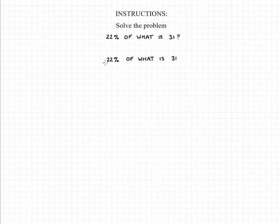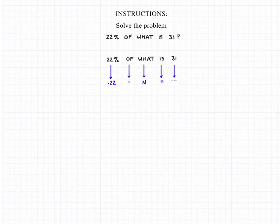To solve this problem we need to translate it: 22% becomes 0.22, 'of' means multiply, 'what' means we need a variable, 'is' means equals, and 31 remains 31. So if we clean that up, we have 0.22n is equal to 31, and we can divide both sides of the equation by 0.22.